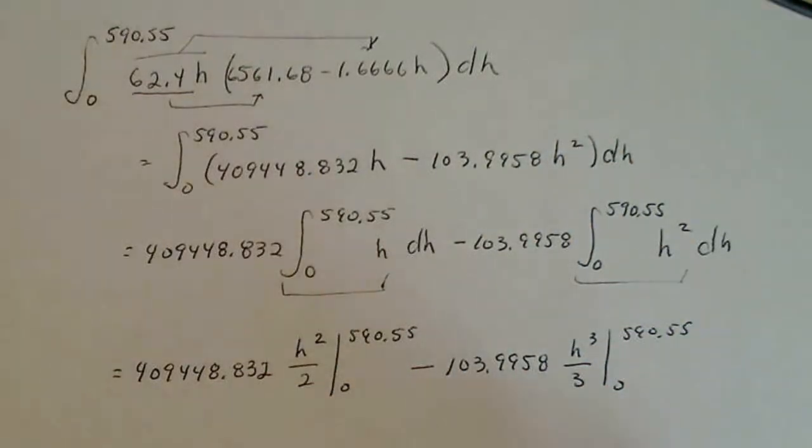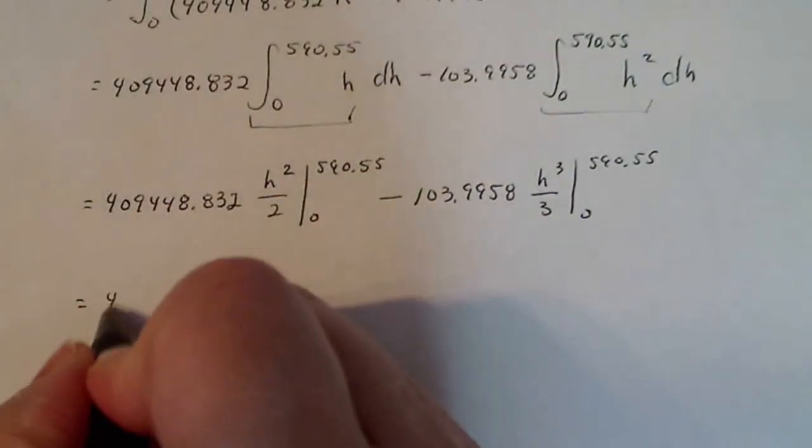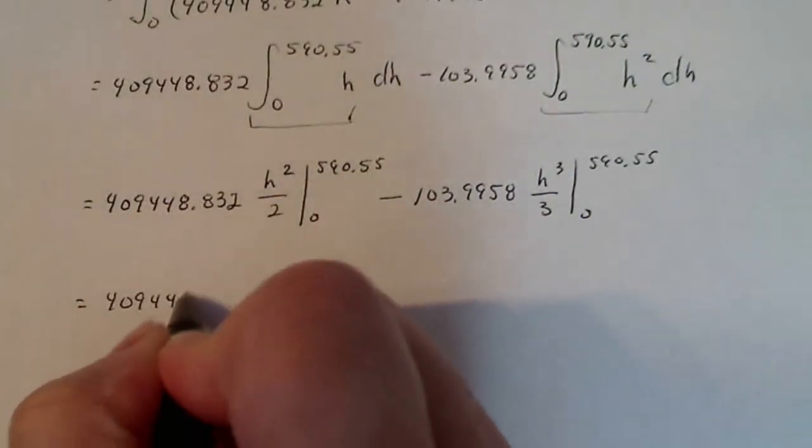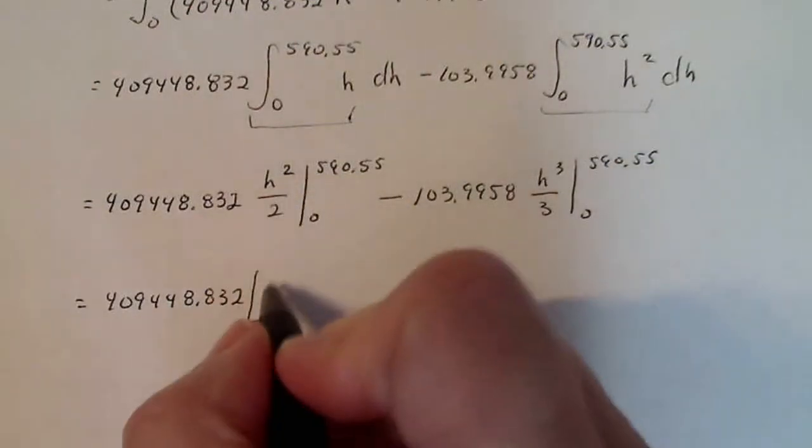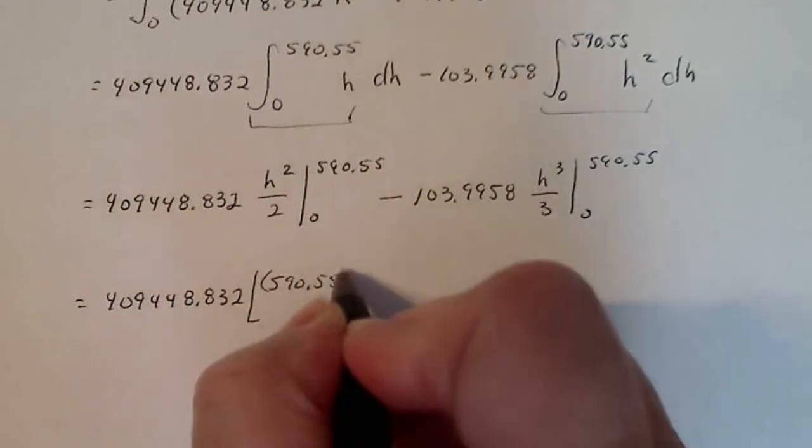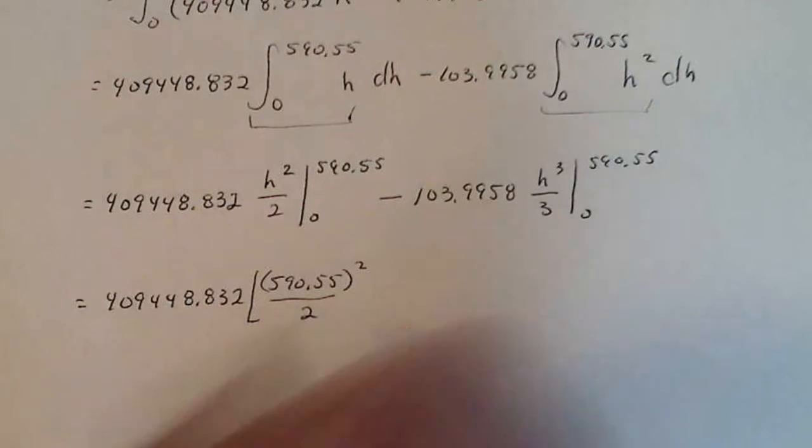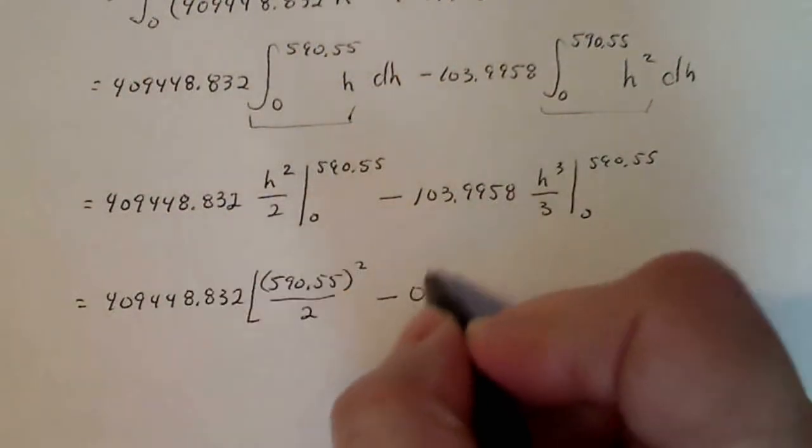Again, take your time, write it out piece by piece. 409448.832 using the fundamental theorem of calculus. I'm going to plug in this number here. So 590.55 squared divided by two minus, I'm going to plug in zero here. That's just zero.